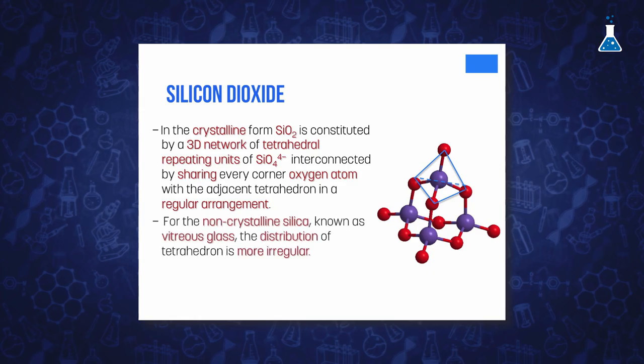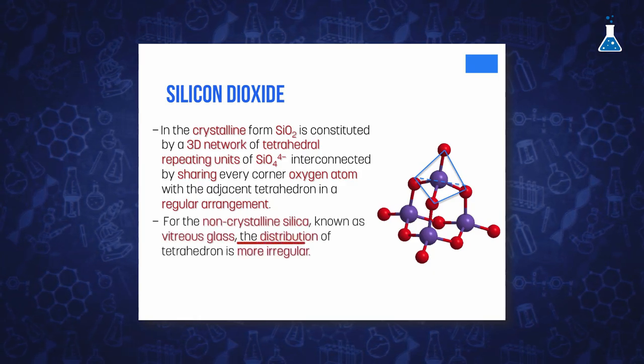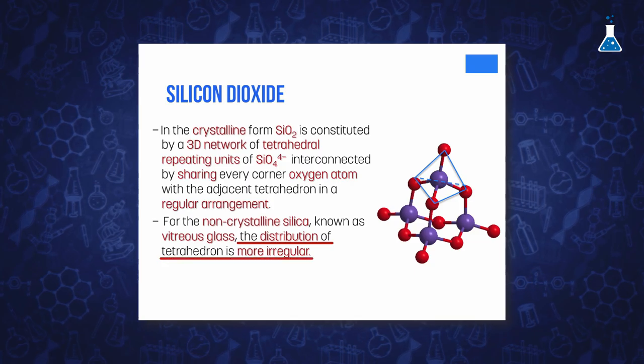In the crystalline form, the tetrahedrons are regularly arranged in space, whereas when silicon is in a non-crystalline form, known as vitreous silica or glass, the distribution of tetrahedrons is more irregular.